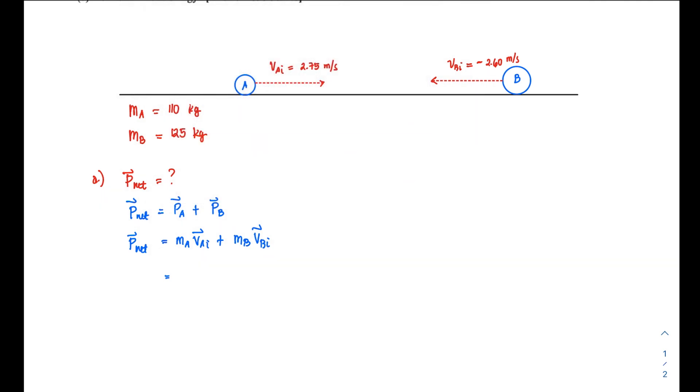m_A is 110 kg. v_A,i—you need to take special note of the sign—is positive 2.75 m/s. m_B is 125 kg. v_B,i, as you can see in the problem, has a negative sign since it's moving left, so it should be written as negative